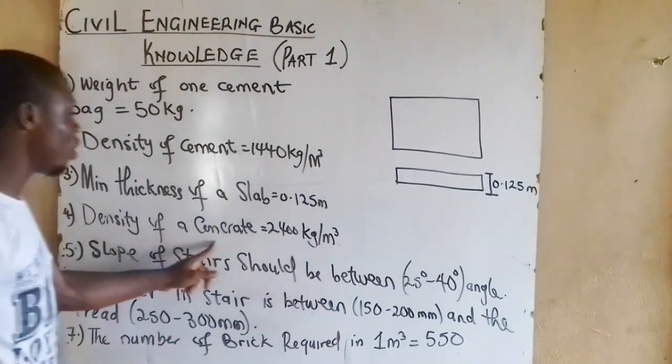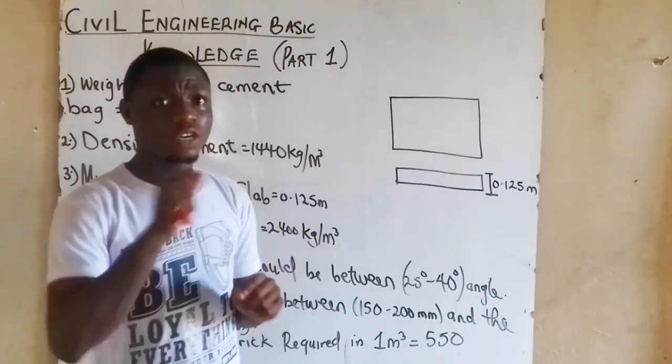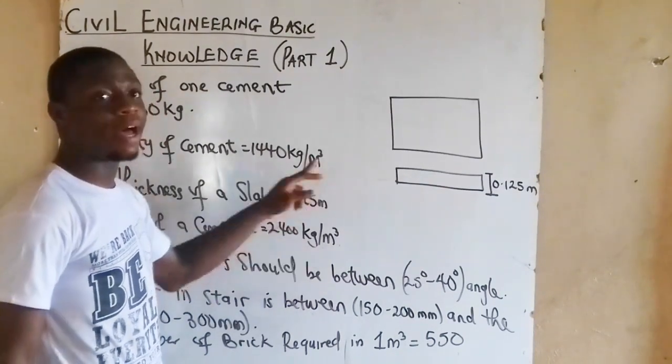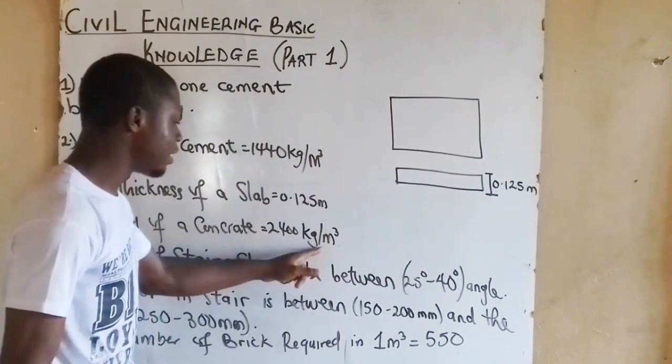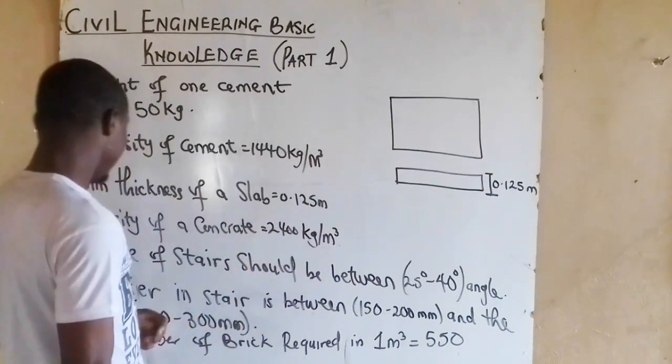Density of concrete. The density of concrete, take note, is 2,400 kg per meter cube. Take this seriously. Take all this serious.